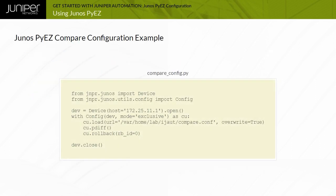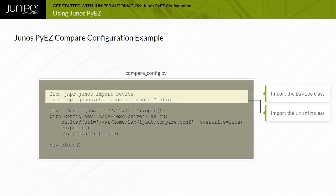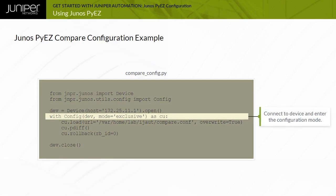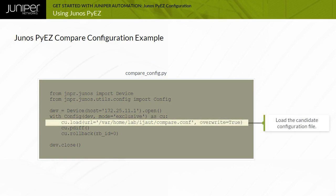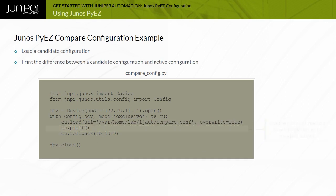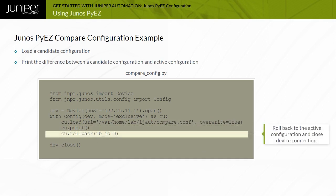This example script imports the Junos PyEasy device and config objects. Python context manager with-as syntax is used to combine the two objects, and the config object load method is used to load a candidate configuration on the target device. The config object pdiff method is used to generate the difference output. The rollback method is used to roll back the loaded candidate configuration, and the device connection is closed.